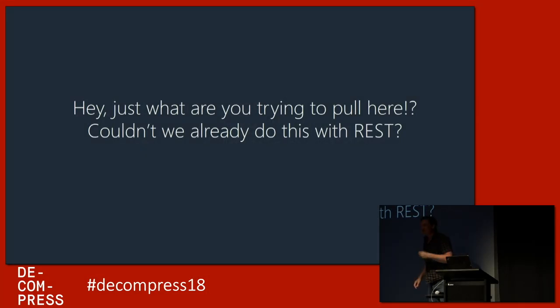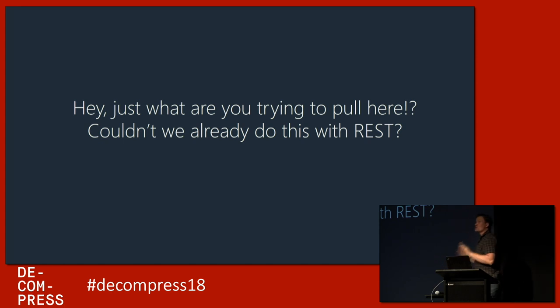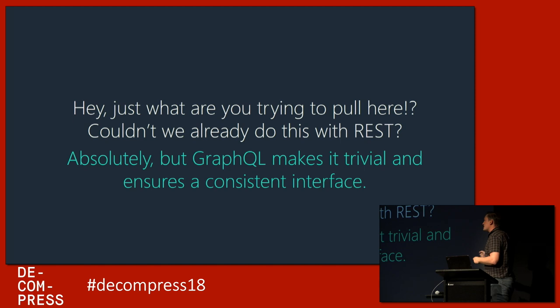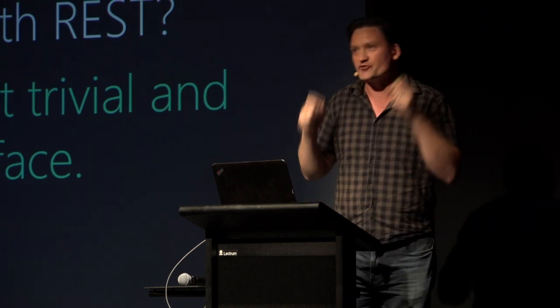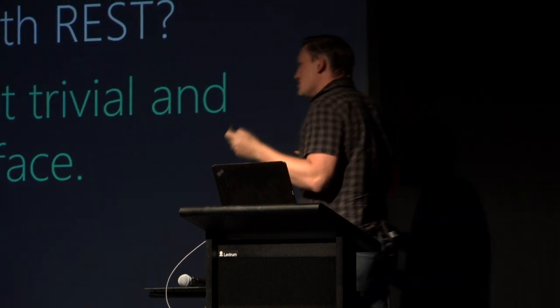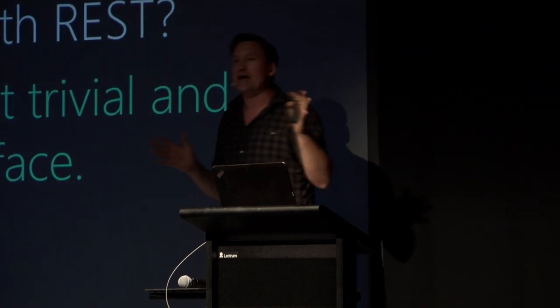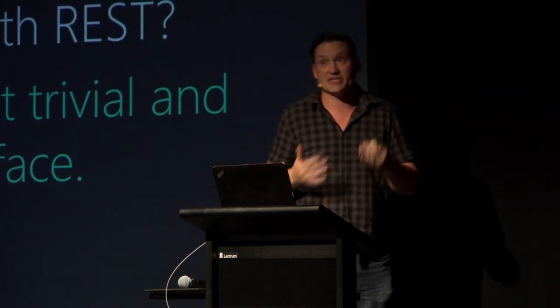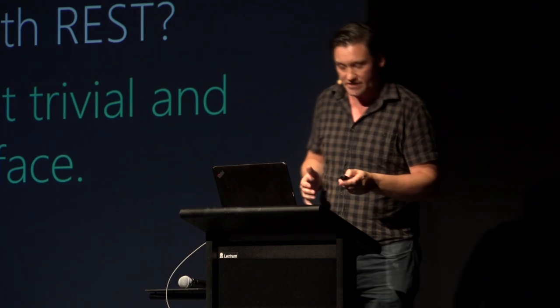The server no longer defines the endpoints the client can interact with — the client takes on control. We've inverted the responsibility: the client now defines exactly the data it needs, satisfying the goal of each different version of each app defining its own query. Some people might think they could have done that with REST, and they're right — but GraphQL makes it simple and trivial. There's no more bike-shedding about sparse field sets or server-side includes. Is crafting a bespoke backend-for-frontend actually delivering business value, or just working around constraints?